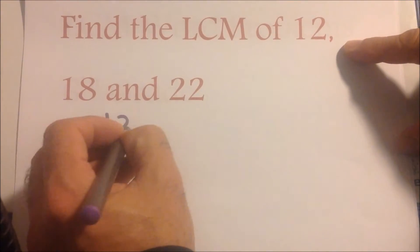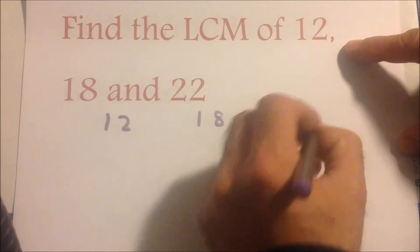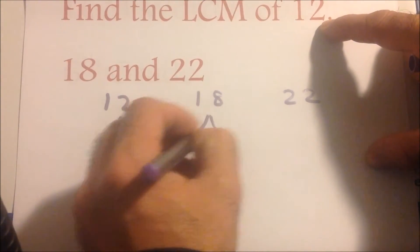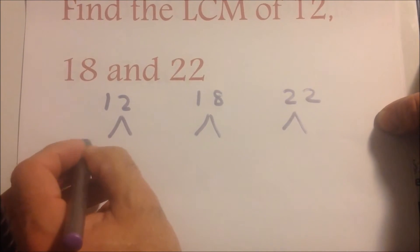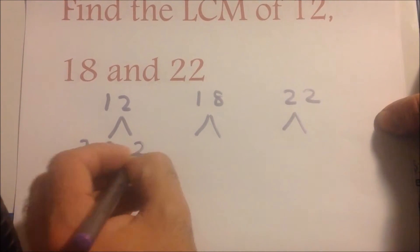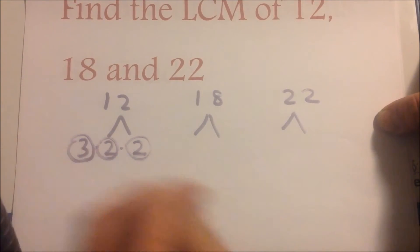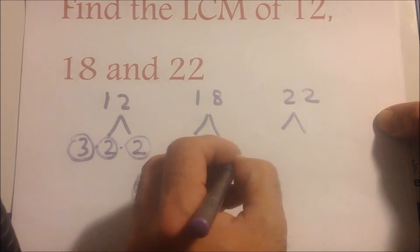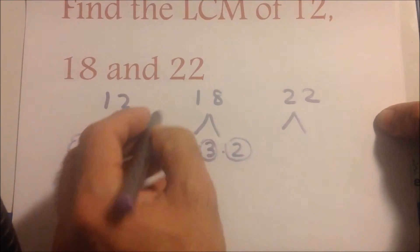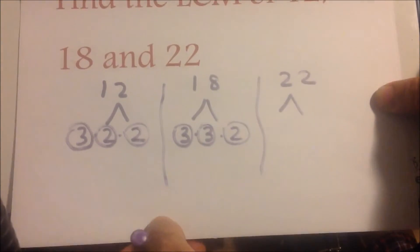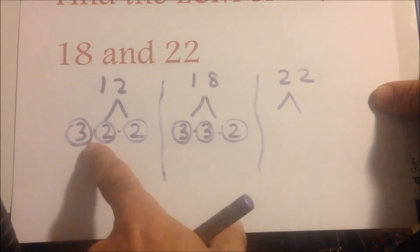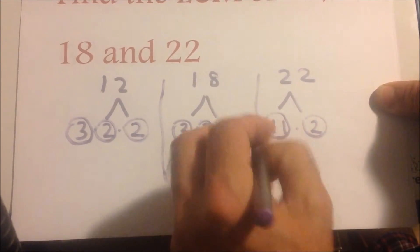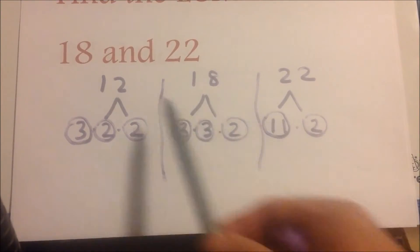For 12, we have 3 times 2 times 2 — circle all the prime numbers. For 18, we have 3 times 3 times 2, because 9 times 2 is 18 and 6 times 2 is 12. For 22, we have 11 times 2, and those are all prime numbers. These are the prime factorizations of each number.